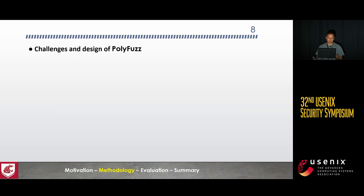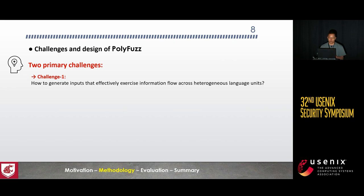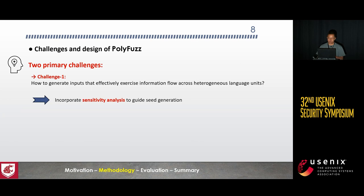These evident limitations prompt us to develop a holistic fuzzing approach for multi-language systems, which poses two primary challenges. The first challenge pertains to how to generate inputs that effectively exercise information flow across heterogeneous languages. To tackle this, PolyFast incorporates sensitivity analysis with holistic coverage management. It explicitly models the semantic relationships between the inputs and the branch predicates using regression models, which can quickly generate effective inputs to flip branches and be aware of cross-language information flow.